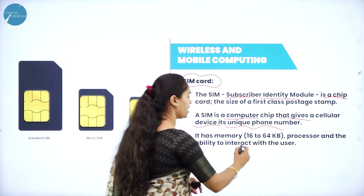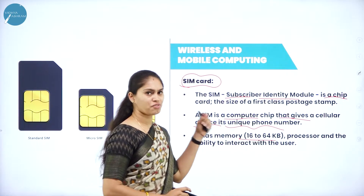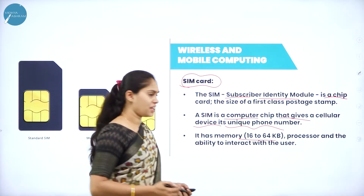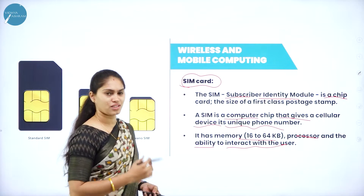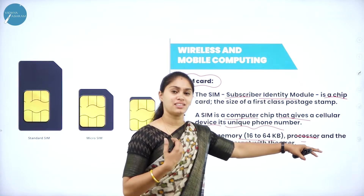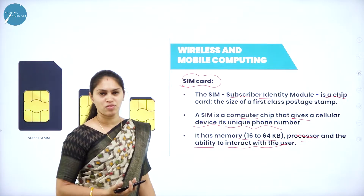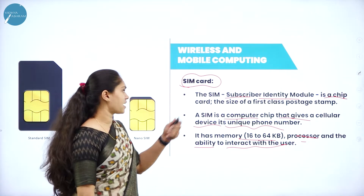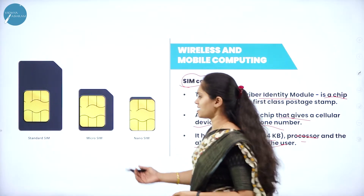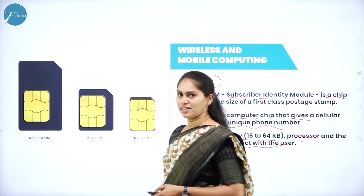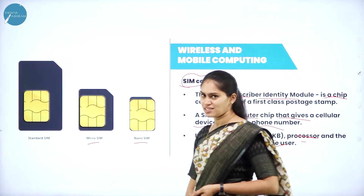When a SIM has memory, it can store up to 16 to 64 KB of data, and it also has a processor, giving it the ability to interact with a user and perform computation. Nowadays, SIM cards come in standard size, micro SIM, and nano SIM.